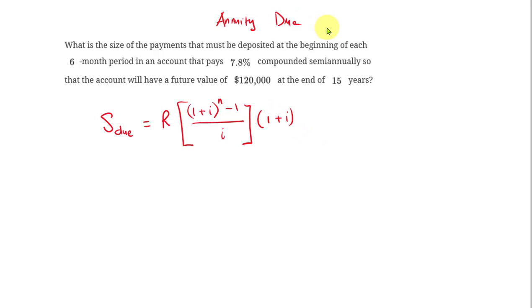This question is about the annuity due. What is the size of the payments that must be deposited at the beginning of each six-month period in an account that pays 7.8 percent compounded semiannually, so that the account will have a future value of $120,000 at the end of 15 years?